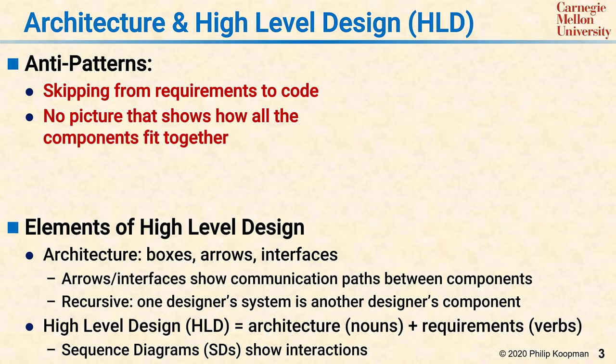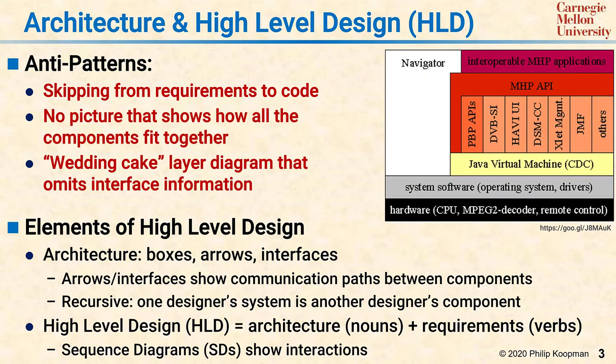Another anti-pattern is not having a picture that shows how all the components fit together. The third anti-pattern is relying solely on a wedding cake layer diagram like the one shown. That does tell you which components are there and gives you some idea of which are on top of others, but there's not any information on exactly how they interface together. So this is only a partial architecture diagram rather than a complete architecture diagram.